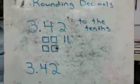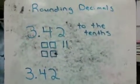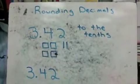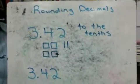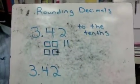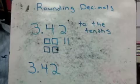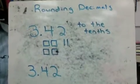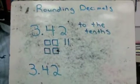The last big decimal topic that we will discuss is rounding decimals to the nearest place value. I'm going to show you a couple different ways to think about this.